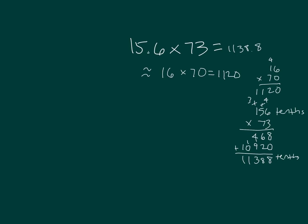For our area model, we have 156 tenths and we're multiplying by 73.